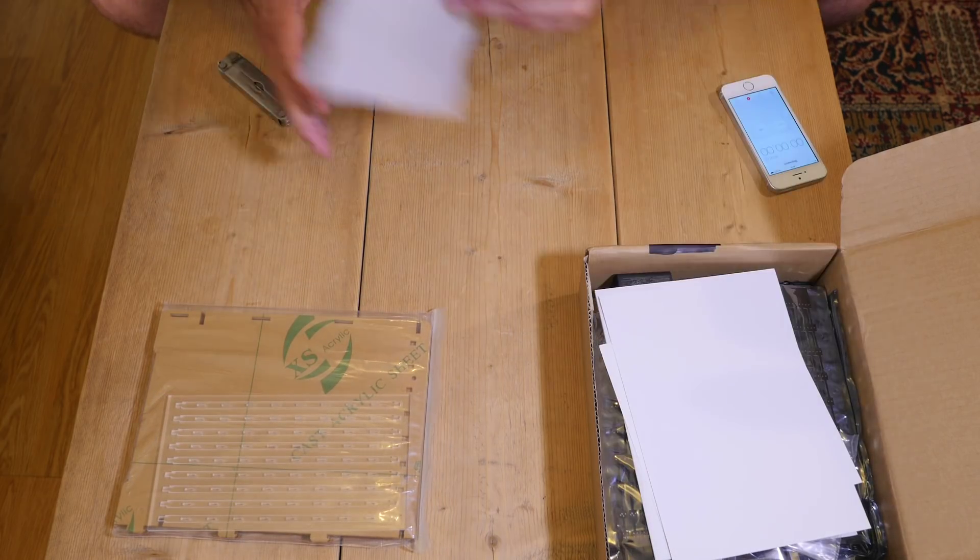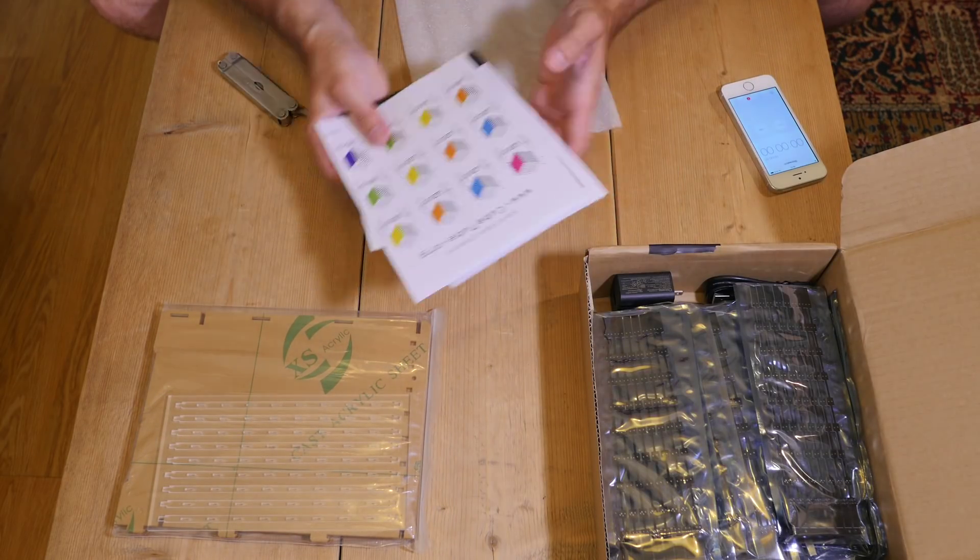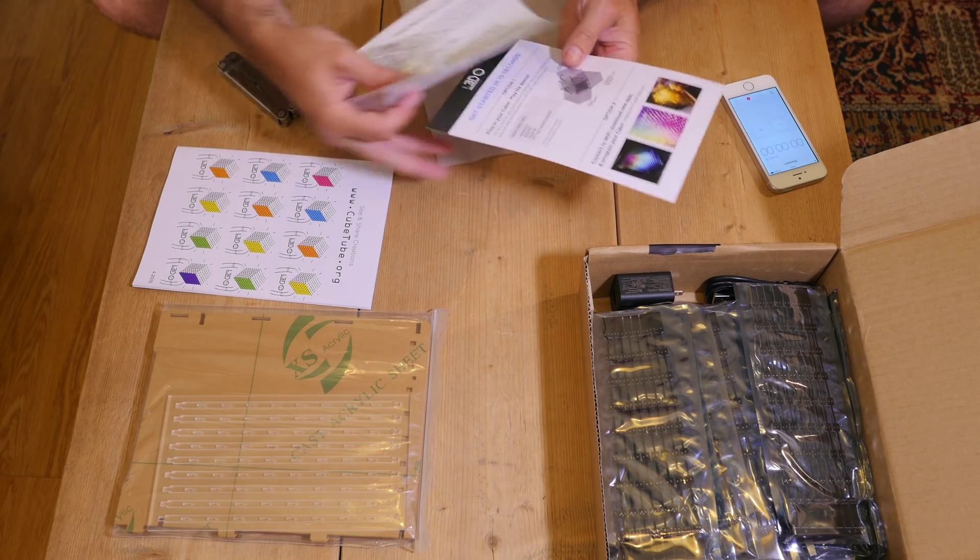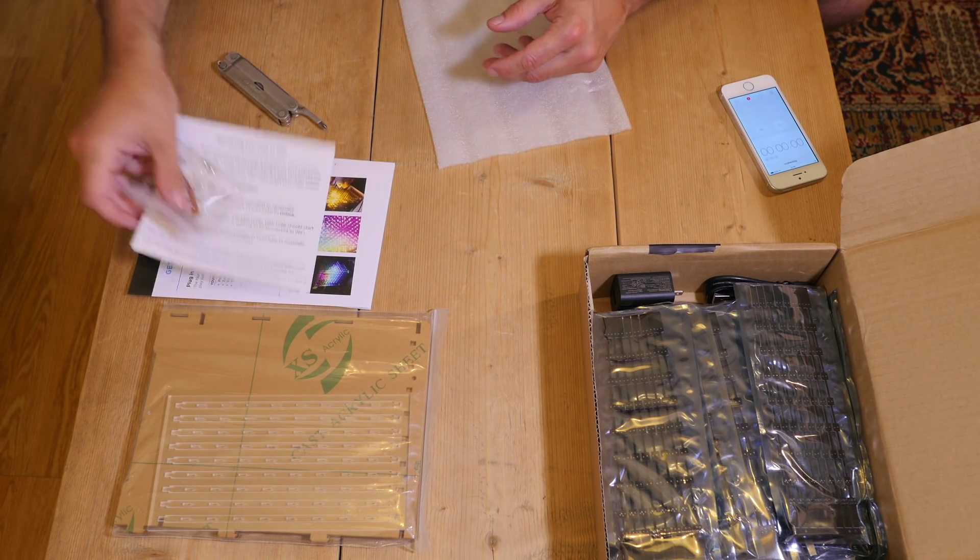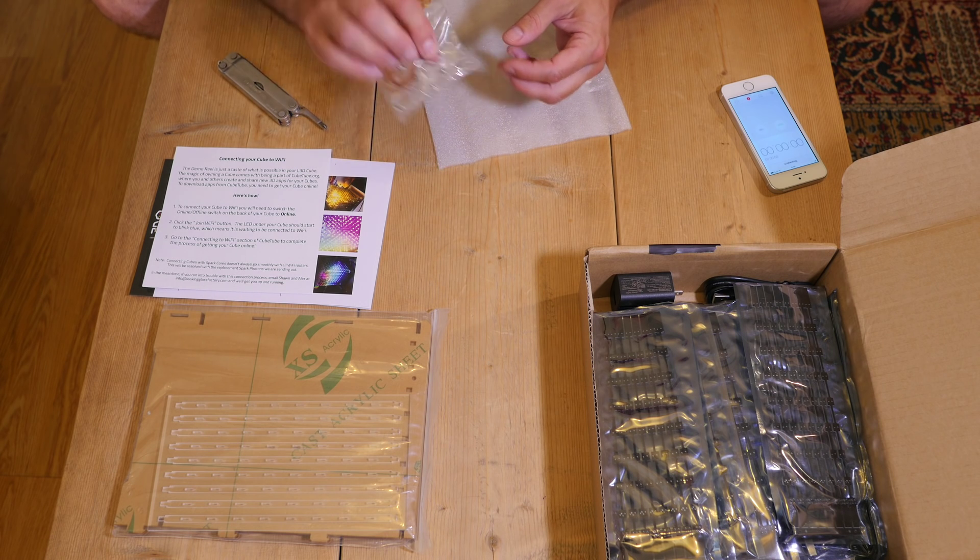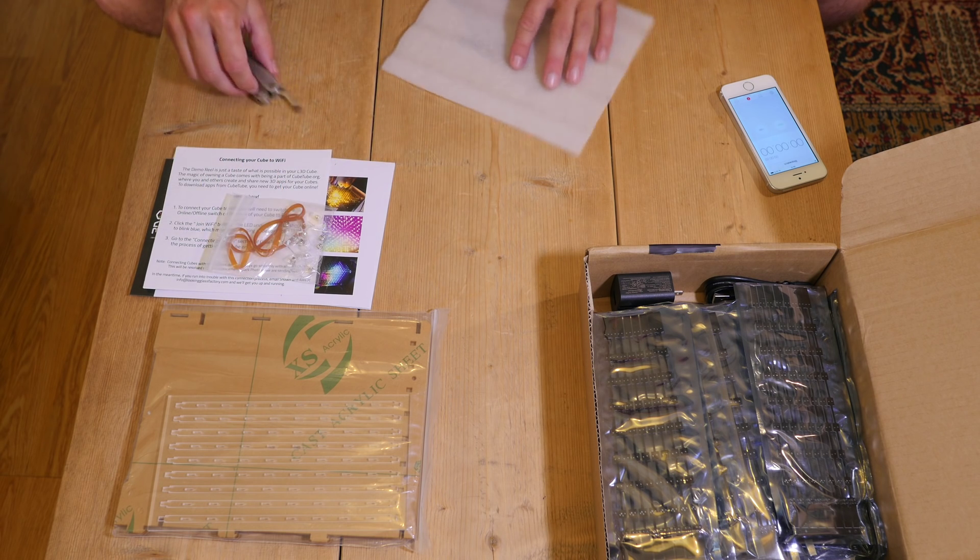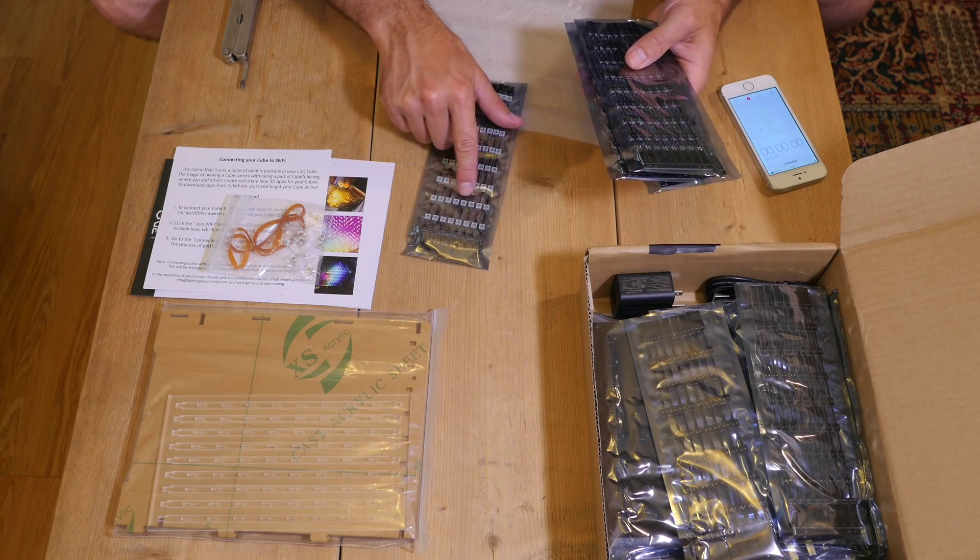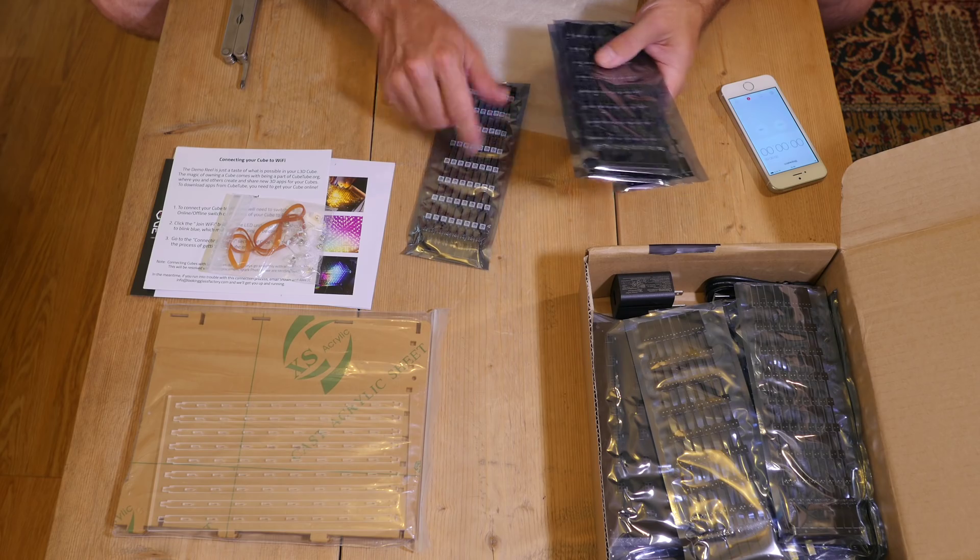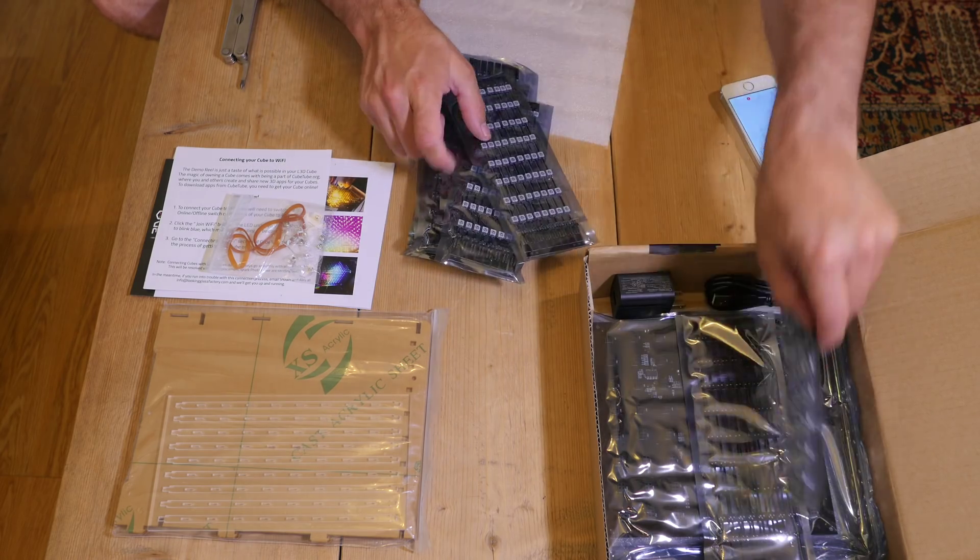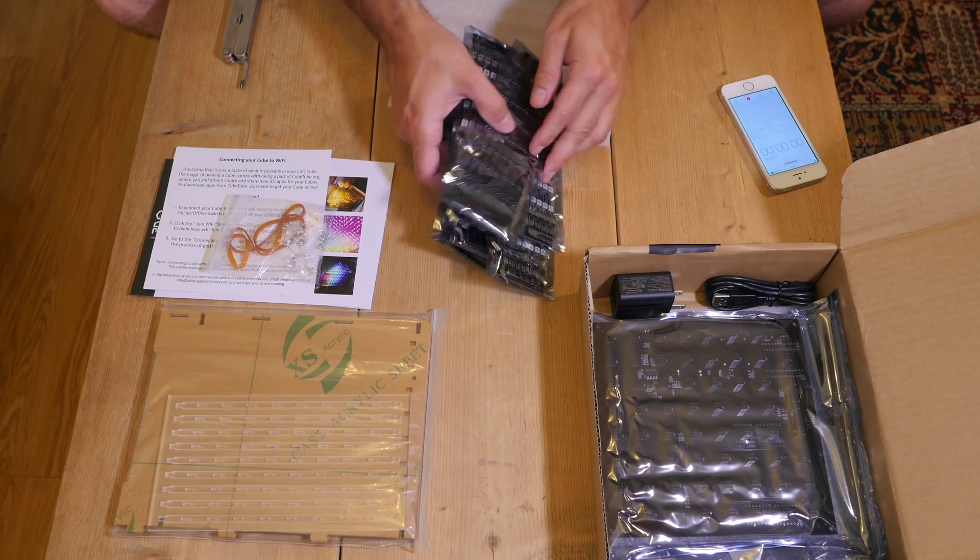Here are the instructions, some promotional stuff, rubber bands, and some little corner pieces. Then we have the LEDs themselves, so that's eight packs of eight which will form our cube.